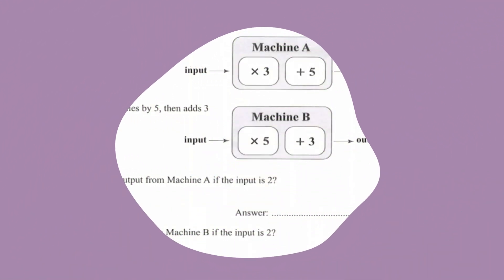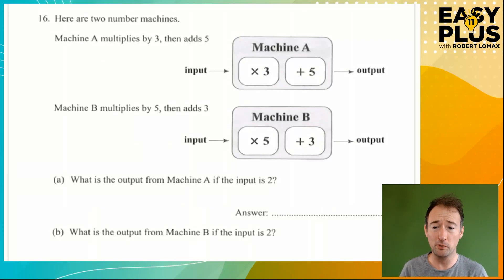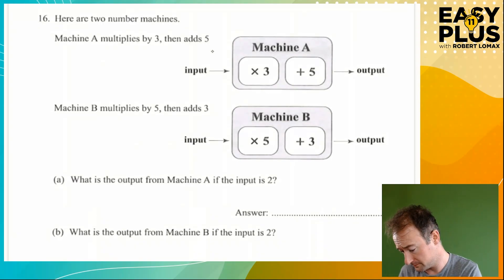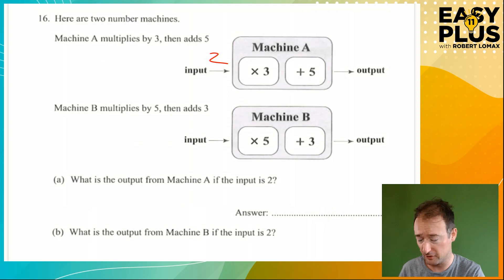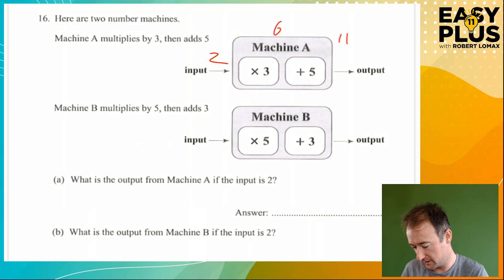So this is an absolutely classic function machine question. Part A: what is the output from machine A if the input is 2? So we try an input of 2 — we times that by 3 which gives us 6, we add 5 which gives us 11. So the answer is 11.